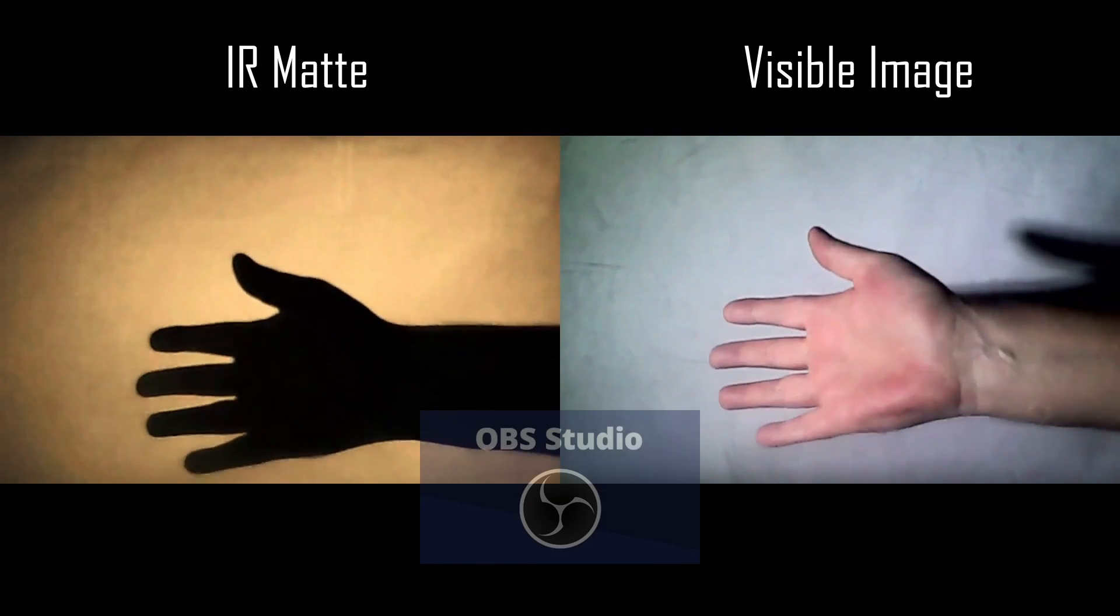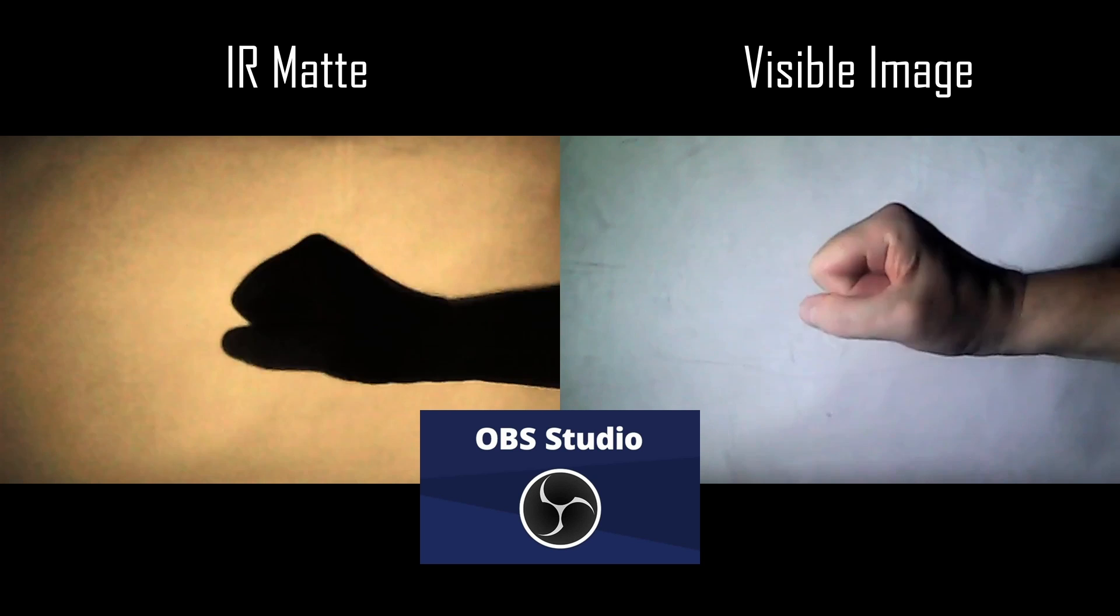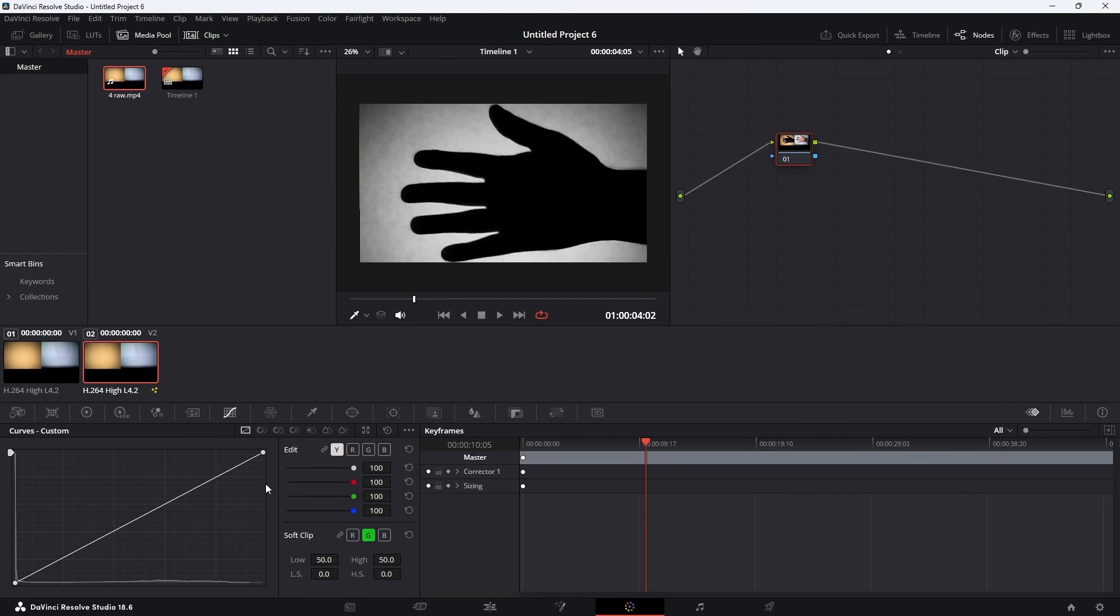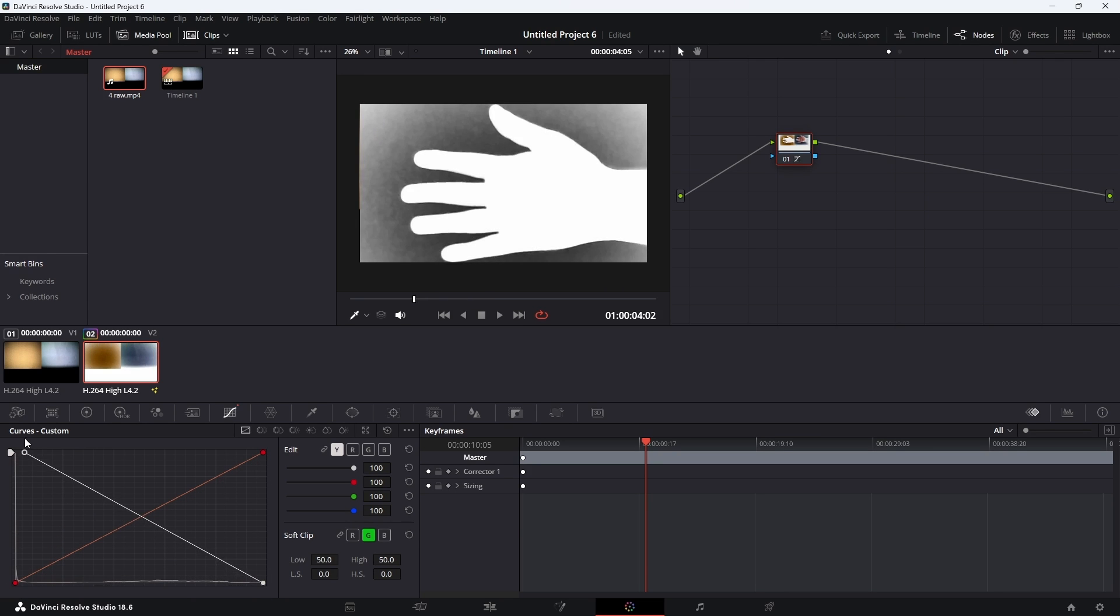I used OBS Studio to capture the images from both cameras together as a single combined image. I then used DaVinci Resolve to post process the foreground and background images. I am by no means an expert with this software, so feel free to tell me in the comments of better methods to process these images into the final composite.